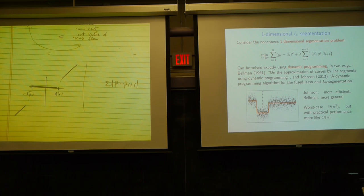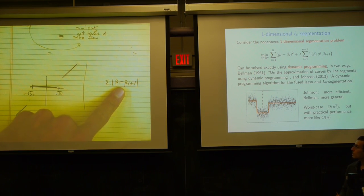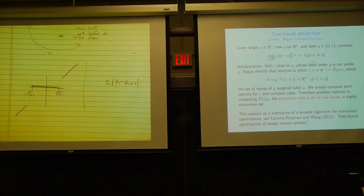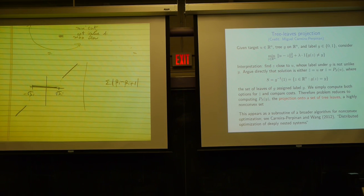Unlike the 1D fused lasso, the L0 version doesn't bias estimated segments toward each other. With the L1 penalty, segments get pushed together due to the bias of soft thresholding. With L0, the penalty is either 0 or 1 regardless of magnitude, so there's no such shrinkage bias. Another non-convex prox operator, from recent work of Miguel Carrera-Prepagnan, arises as a subroutine in a broader non-convex optimization algorithm.